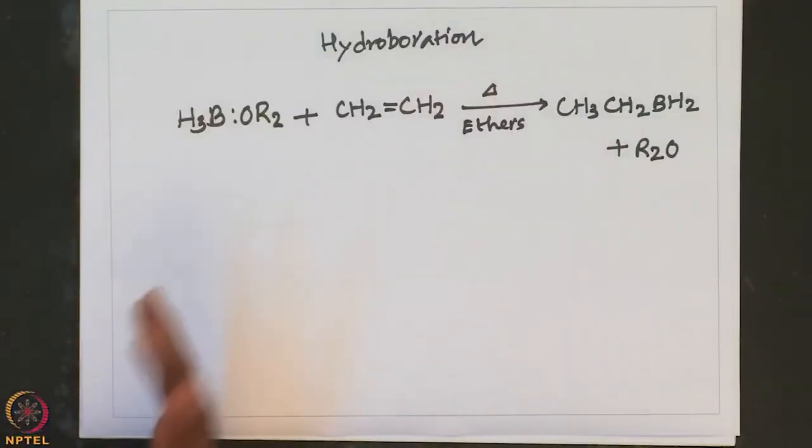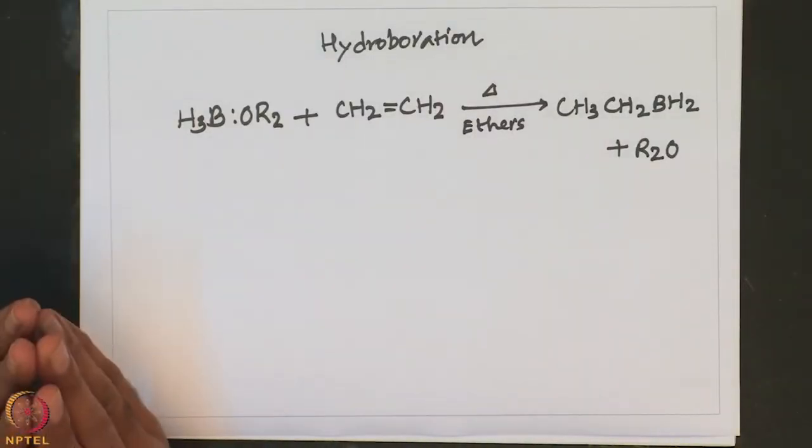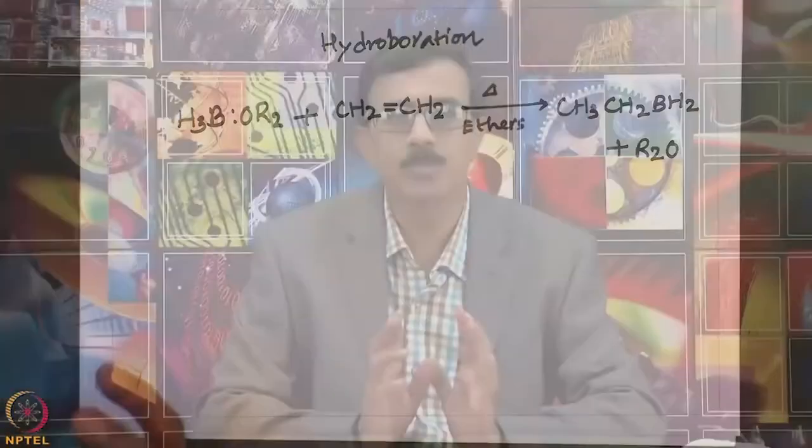The BC bond in the primary product of hydroboration is an intermediate stage in the stereospecific formation of a CH bond or a COH bond — that means further reaction can make a CH bond or a C-OH bond. From the inorganic chemistry point of view, hydroboration is a very convenient method for the preparation of a wide variety of organoboranes. Let us look into another interesting ion: BH4-.